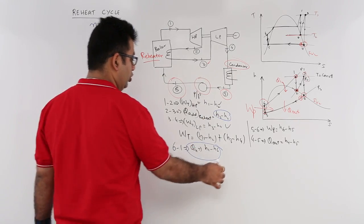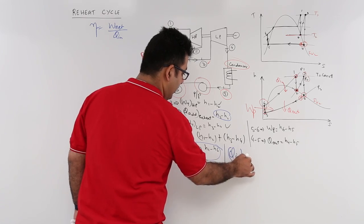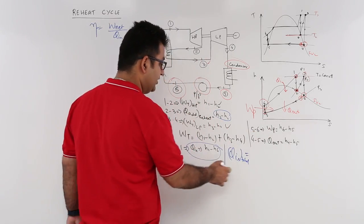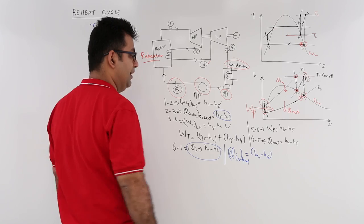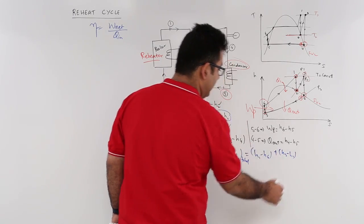Your total input heat equals (H1 - H6) plus (H3 - H2). This is what you will use in finding out Q_in.